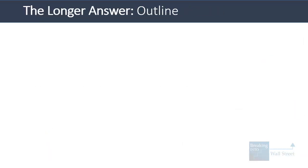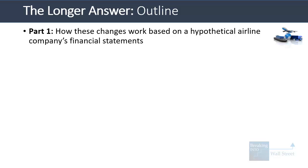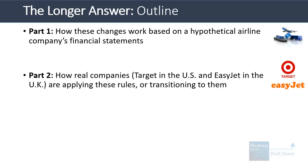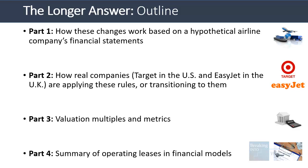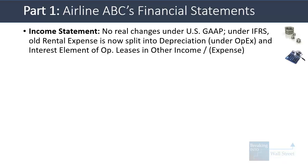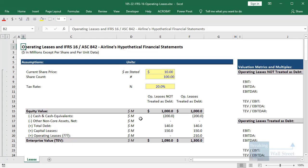Let's now go into the longer answer. First, we'll go through how these changes work based on a hypothetical airline company's financial statements. Then we'll look at how Target in the US and EasyJet in the UK are applying these rules. Then we'll examine the impact on valuation multiples, and finally do a quick summary. Let's start with Airline ABC's financial statements.